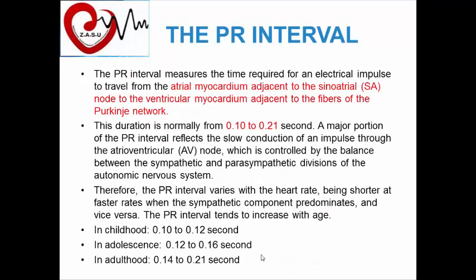The PR interval measures the time required for an electrical impulse to travel from the atrium adjacent to the sinoatrial node to the ventricular myocardium adjacent to the Purkinje network. The duration is normally 0.1 to 0.2 seconds. The PR interval varies with heart rate, being shorter at faster rates due to sympathetic tone. The PR interval tends to increase with age: in childhood 0.10 to 0.12 seconds, in adolescence 0.12 to 0.16 seconds, and in adulthood 0.14 to 0.21 seconds.